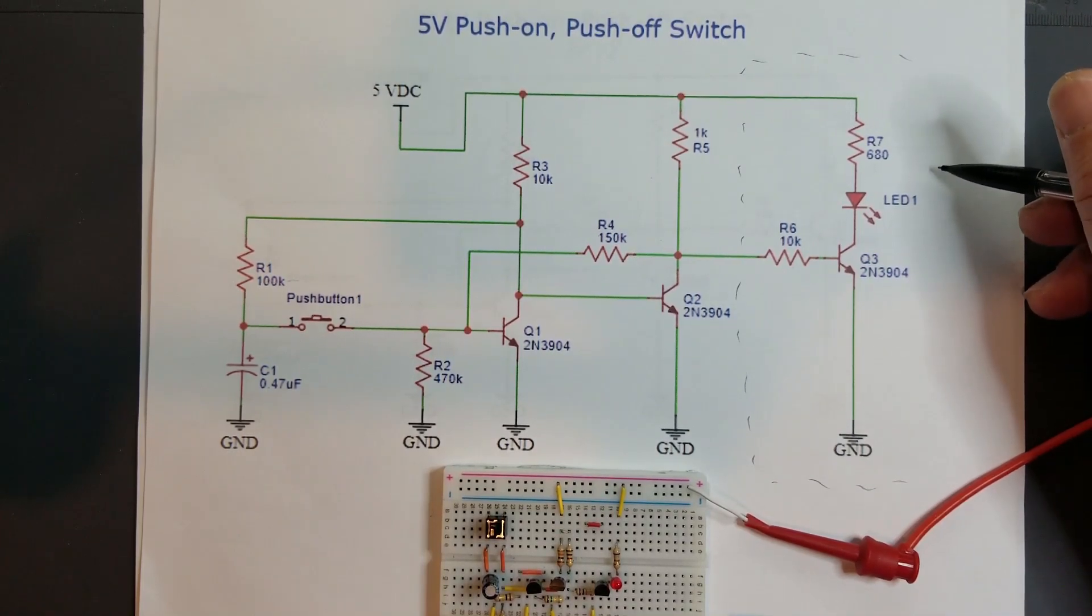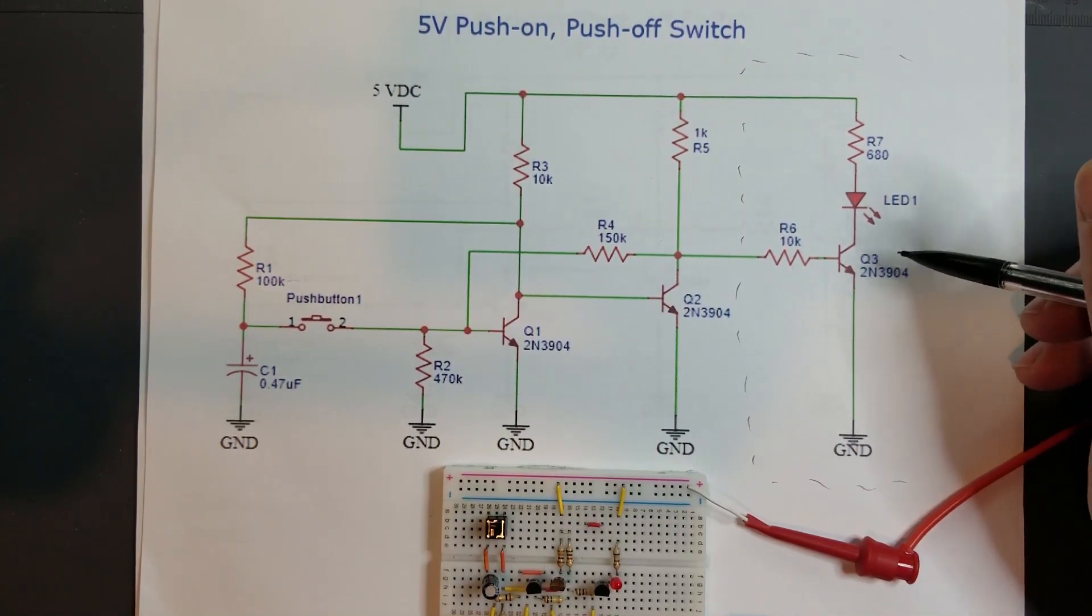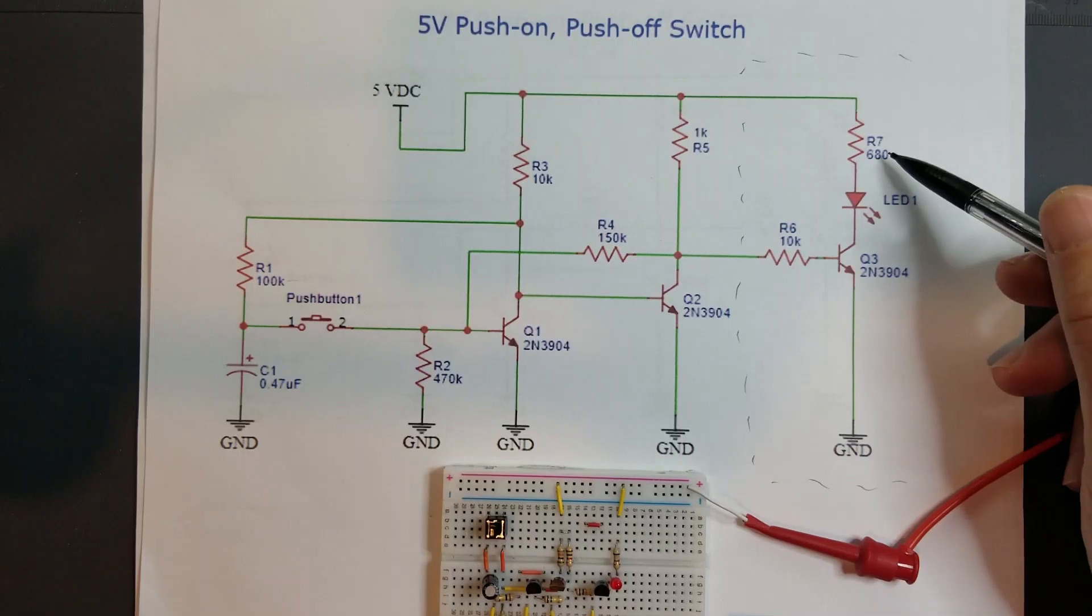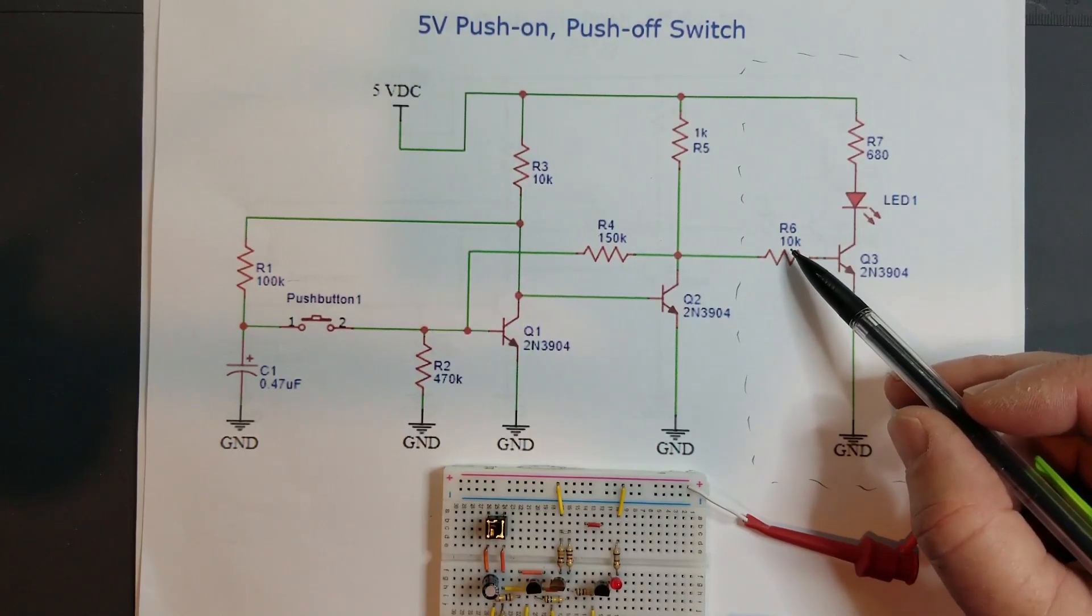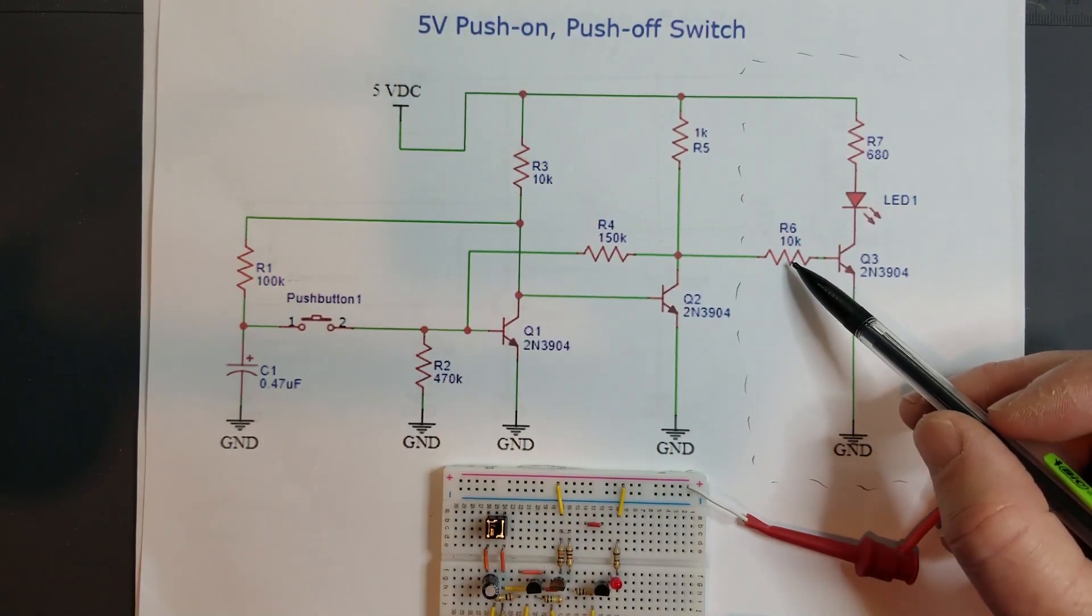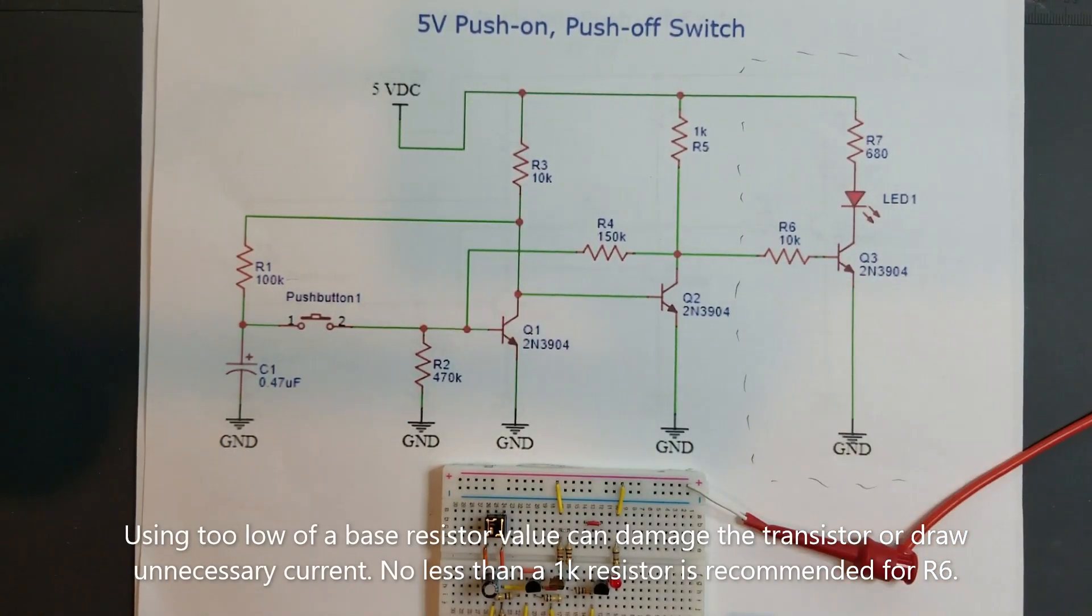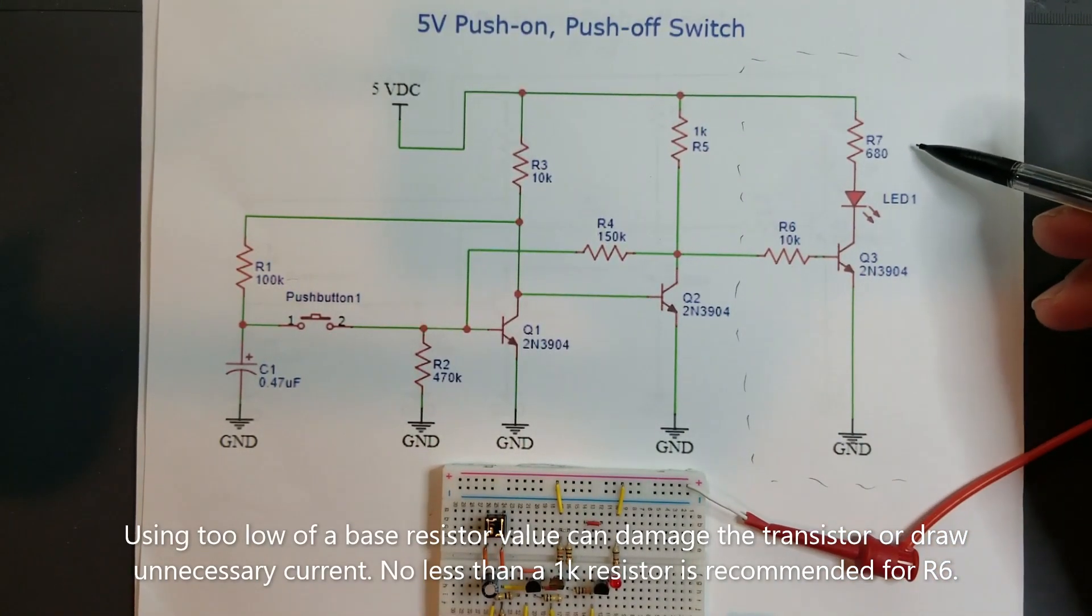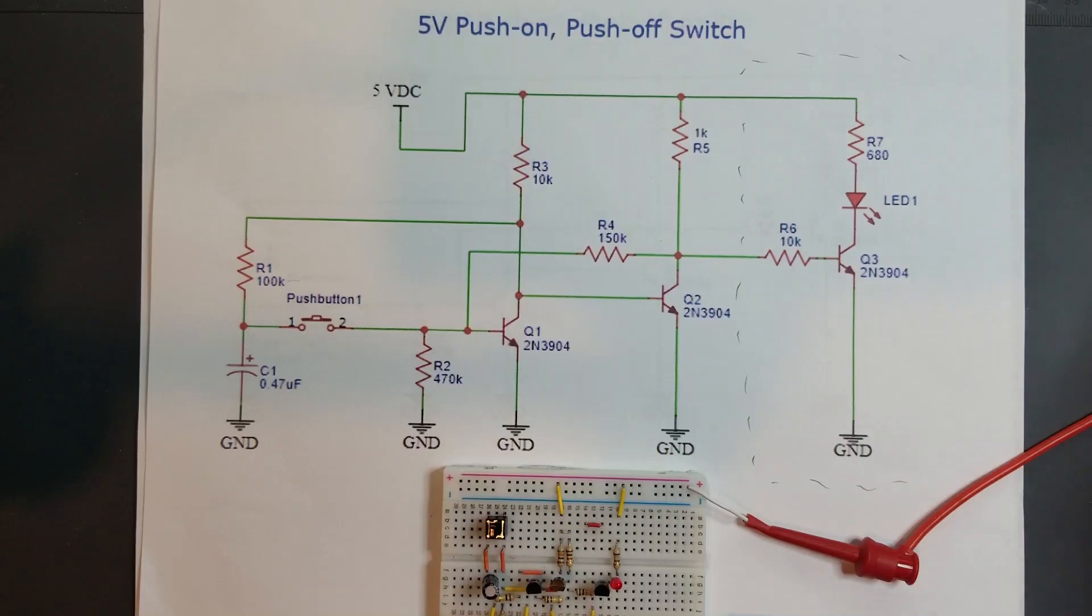That would be 50 milliamps through this 2N3904, which is okay, but you probably don't want to push it much higher than that. But if you're going to have a 100 ohm resistor there, then you're going to want to reduce this resistor value here so that it's going to be about a 50 to 1 or less ratio. So that would be a 5k or 4.7k resistor. You could also use an optocoupler and drive pretty much whatever you want or however you want to use the output circuit.